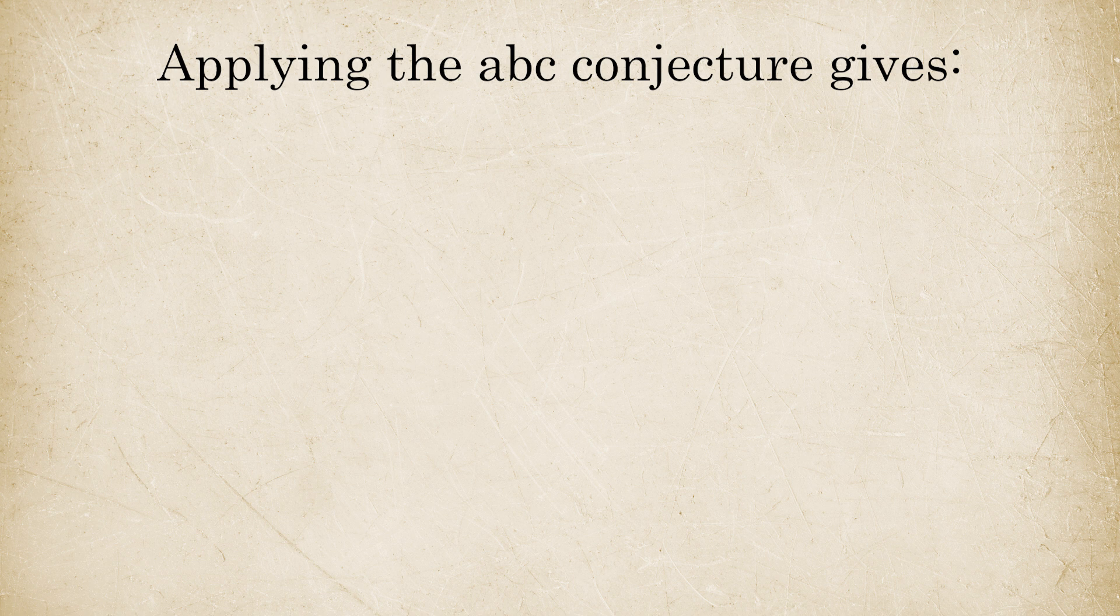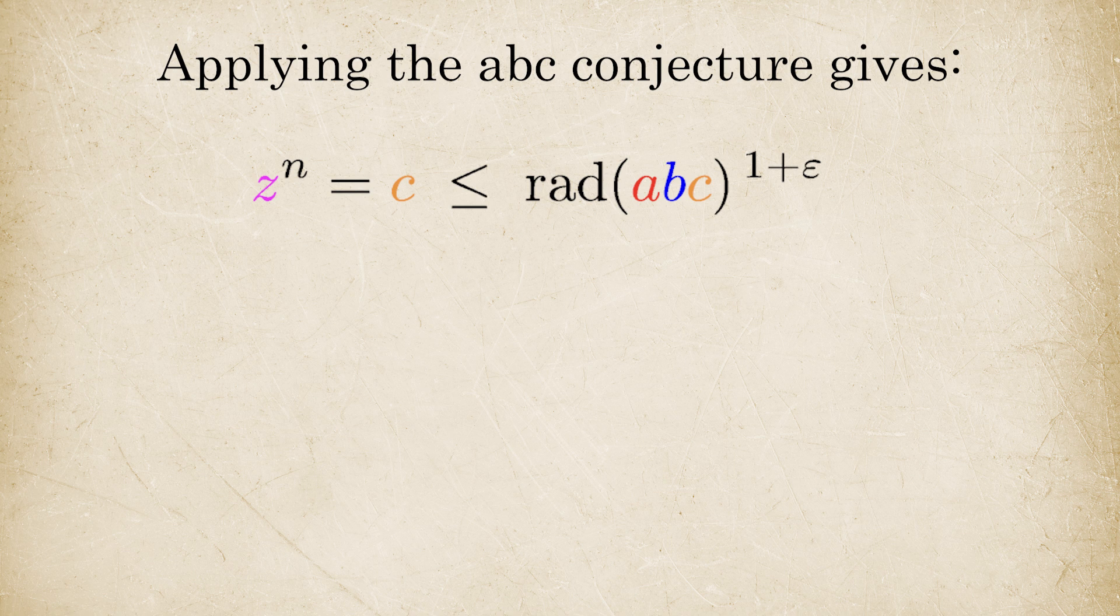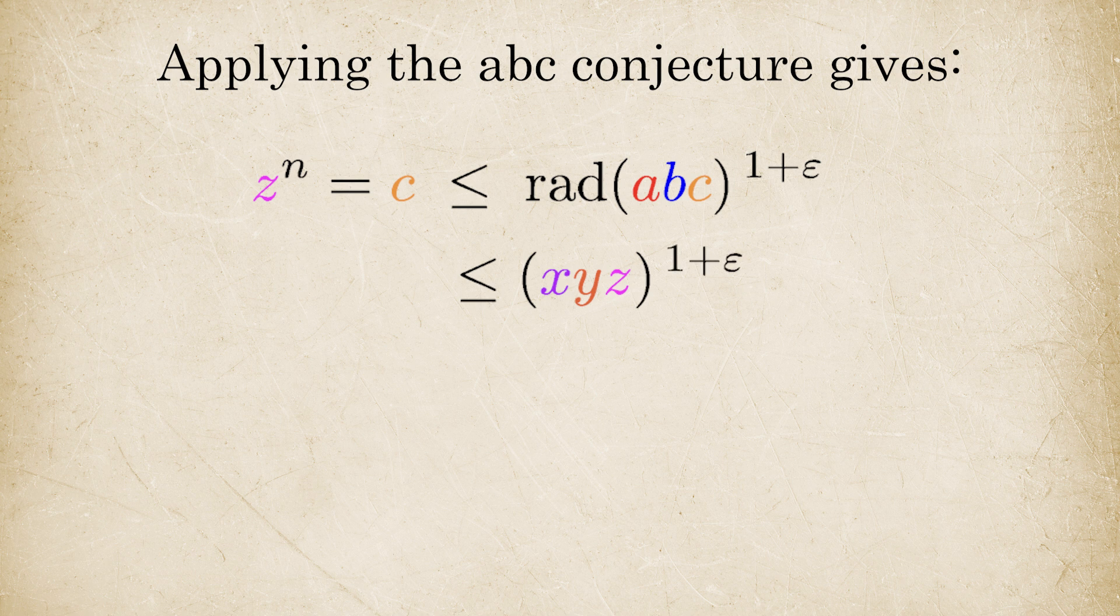Applying the ABC conjecture says C is usually less than the radical of ABC. There can be exceptions to this, but the conjecture says they are finite and can be individually checked. After a bit of simplification, we get an inequality that says Z power N is less than Z power 3 plus epsilon.